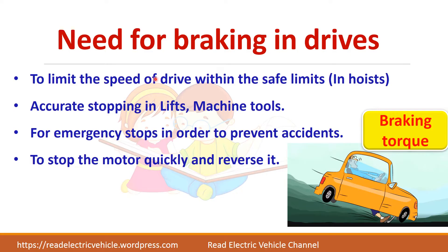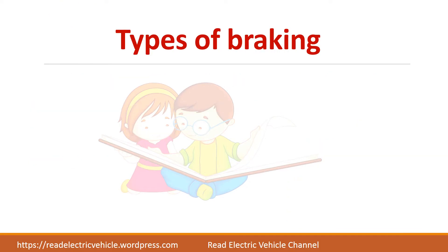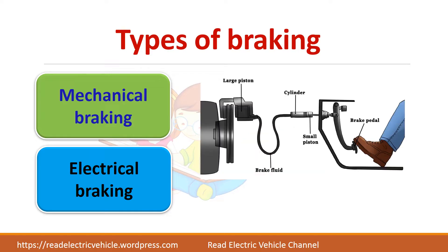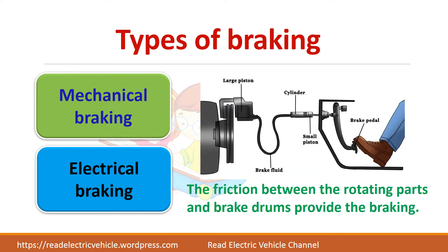For all these cases, you have to somehow develop the braking torque either electrically or mechanically. There are two types of braking: mechanical braking and electrical braking. In mechanical braking, the friction between the rotating parts and the brake drum provides the braking. There are some drawbacks with mechanical braking, so normally electrical braking is preferred in electrical drives. In most applications, both electrical braking and mechanical braking systems will be provided, because electrical braking alone may not be sufficient at all conditions.